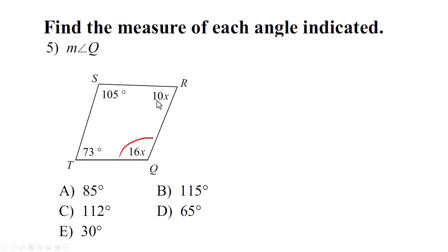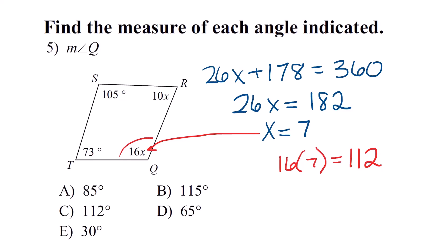Alright let's add everything up. 10X and 16X is 26X. 105, 73 is going to be 178 and that's going to equal 360. I subtracted 178 and I get 26X equals 182. Now divide by 26 and we end up with X equals 7. They want to know the measure of angle Q so you've got to substitute that in by multiplying times 16 so we end up with 112. The correct answer is C.